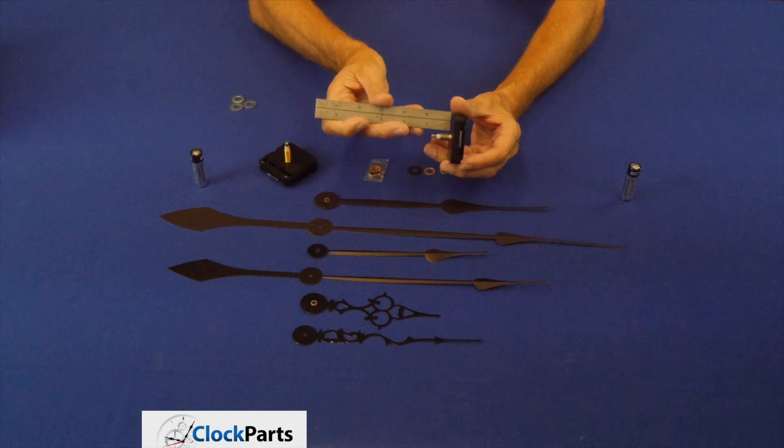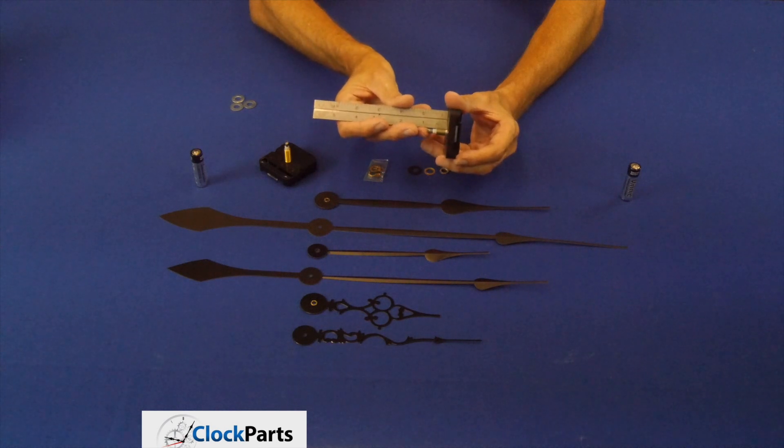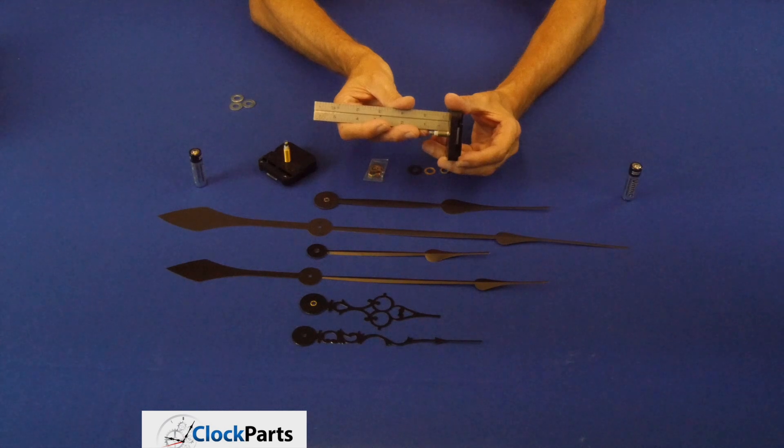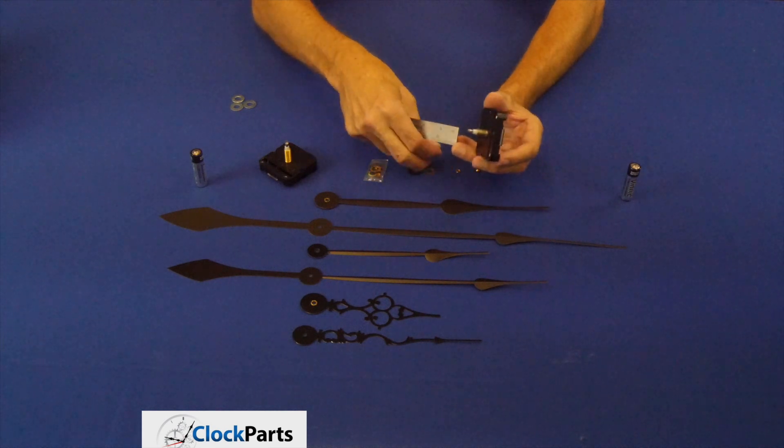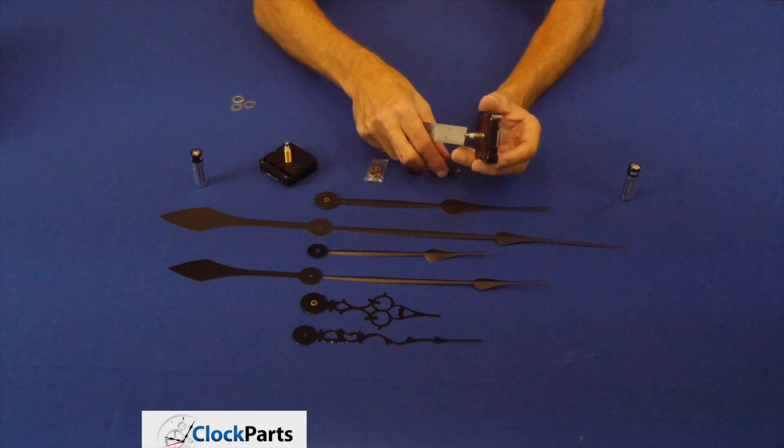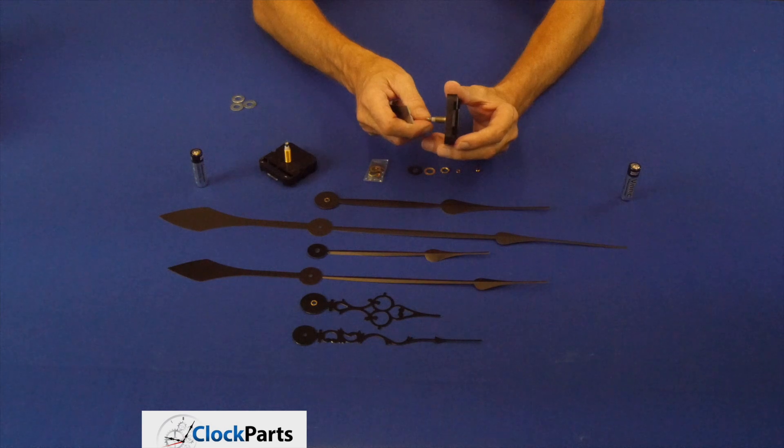But if you don't have a lens on your clock, you're really concerned with the threaded part. As you can see, this is seven sixteenths of an inch. So it'll go through material up to three eighths of an inch. Then you can put on the washer and the hex nut and secure it to your dial material.